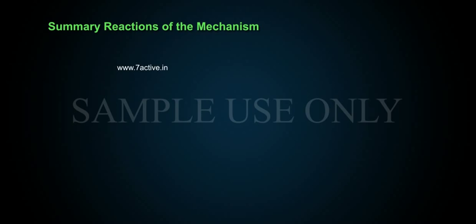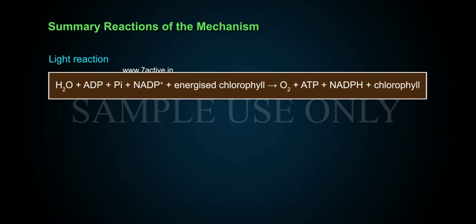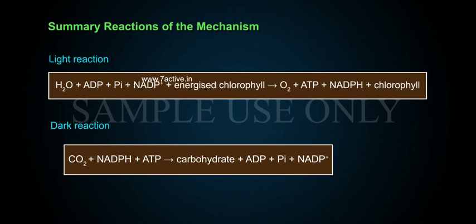Summary reactions of the Mechanism: Light reaction — H2O + ADP + Pi + NADP+ + energized chlorophyll gives rise to O2 + ATP + NADPH + chlorophyll. Dark reaction — CO2 + NADPH + ATP gives rise to carbohydrate + ADP + Pi + NADP+.